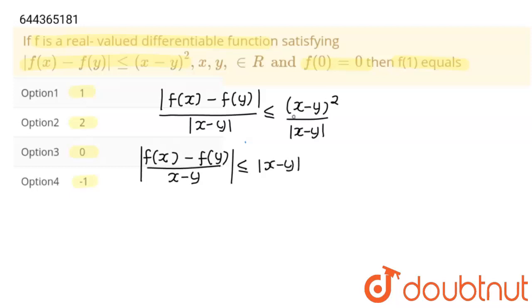this will become |x - y| because we can write x² equals |x|². This is the main concept.